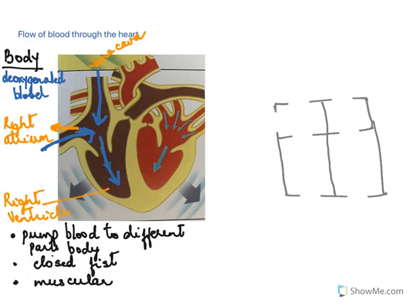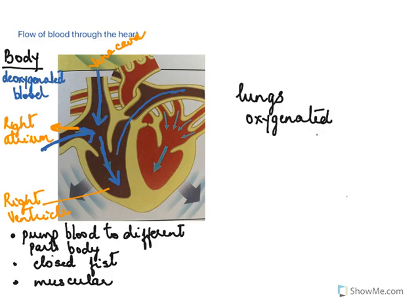From the ventricle, the blood flows through the pulmonary artery to the lungs. Once it reaches the lungs, it gets oxygenated — it becomes rich with oxygen.